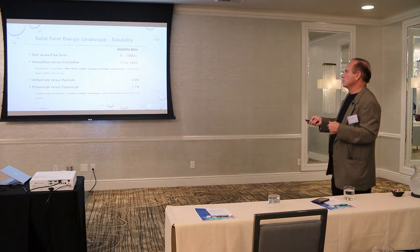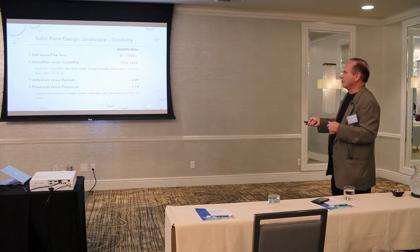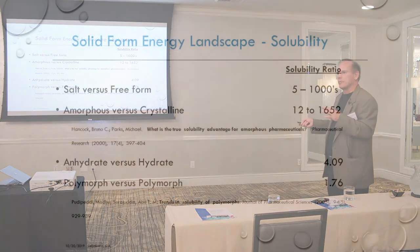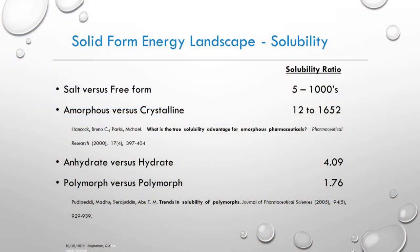But once you've chosen that, you look at polymorphism, and about 30 to 40 percent of compounds will form a hydrate. So you almost always have to deal with hydrates — a good percentage of the time you have to deal with a hydrate, where that transition humidity or water activity occurs, and determine which one is best for your processing and control of your product.